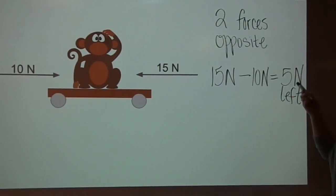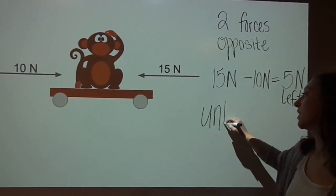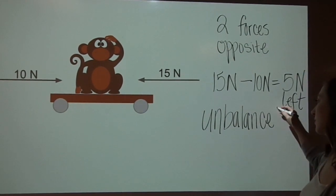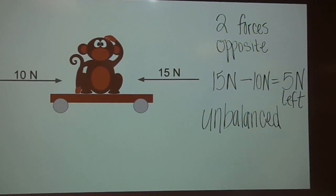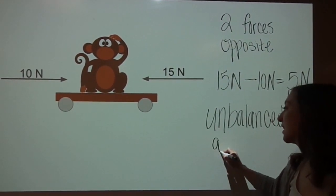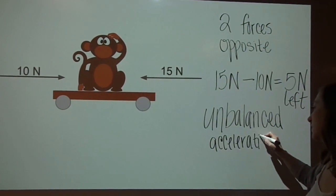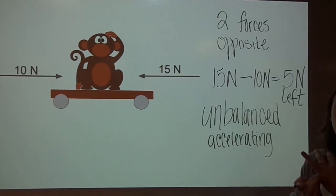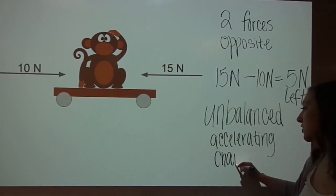Because our answer is not 0 newtons, we know that the forces are unbalanced. This means the monkey car could be accelerating, which means the monkey could be changing speed or direction.